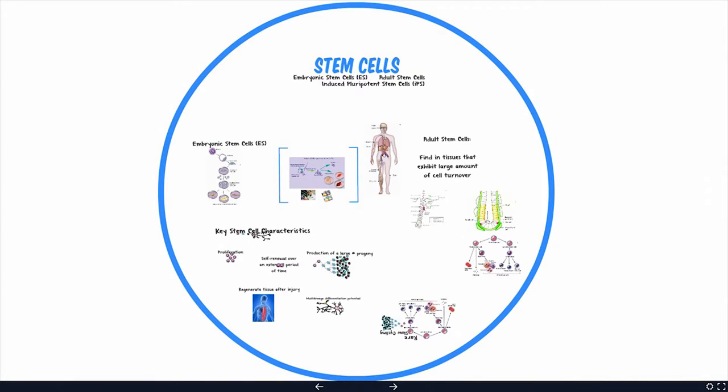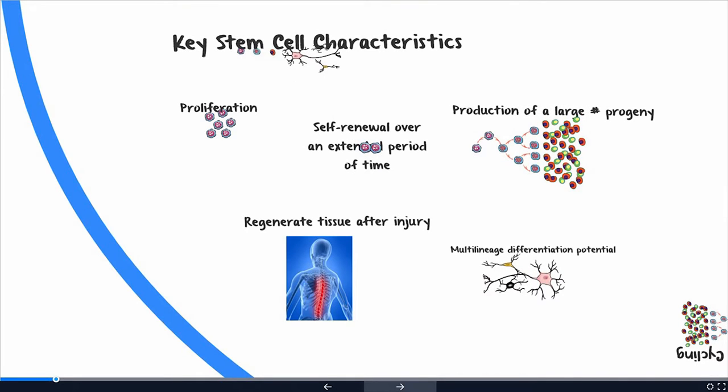We define stem cells — somatic stem cells, adult stem cells — primarily based on what they do. It's kind of interesting. We identify most cells based on what they look like: they may have an antigen profile, there may be an antibody that binds to it. But we define stem cells in the adult mammalian body based on what they do. Another way of putting it is: a stem cell is actually a verb, it's not a noun. We think of it as a noun, but it's actually a verb in how we define it.